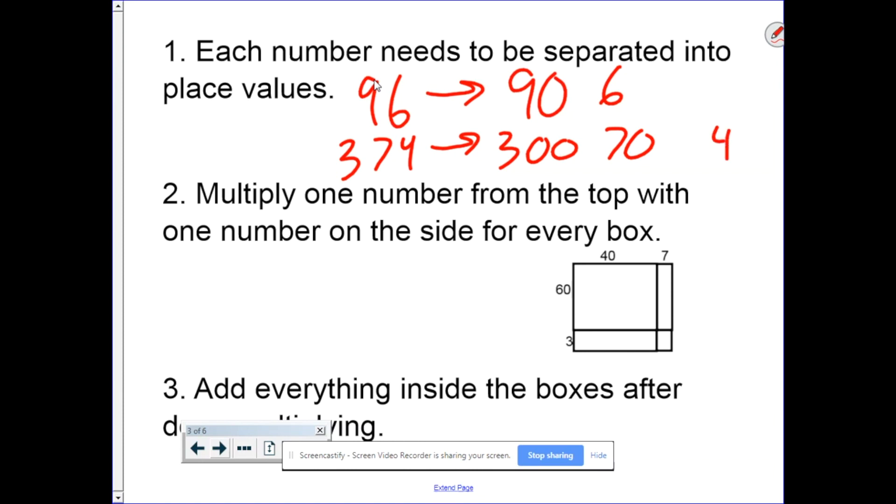2. Multiply one number from the top with one number from the side for every box. So in this example, we have the 40 and the 60. So that's 60 times 40. Over here, we have 60 and 7. Going down below, we have 40 times 3. And then the last box is 3 times 7.